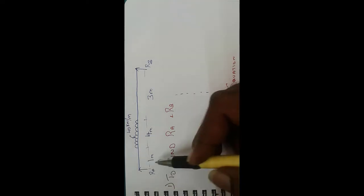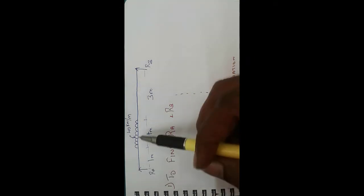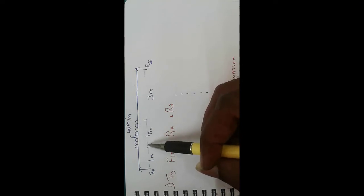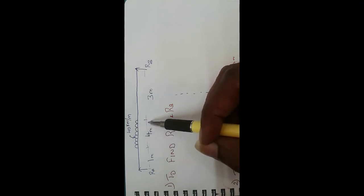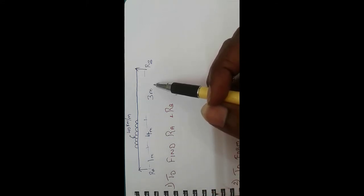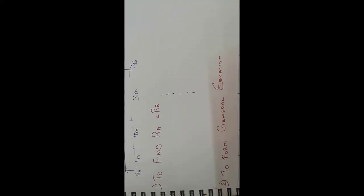Good morning students. In this video we are going to see another problem on Macaulay's method. A simply supported beam carries a partial UDL of 40 kilonewton per meter over a distance of 4 meters, and the total length of the beam is 8 meters. The first step is to find RA and RB.